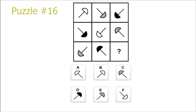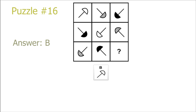Puzzle 16. This puzzle is exactly the same as the previous puzzle. Instead, it's the color which repeats on the top left to the bottom right diagonal, and the shapes rotate 90 degrees per diagonal, so it repeats every 4 diagonals. The correct answer is B.